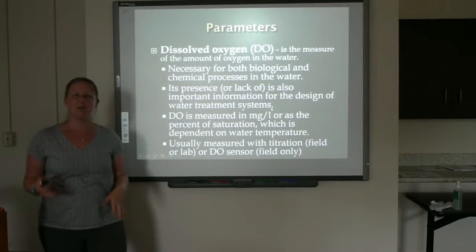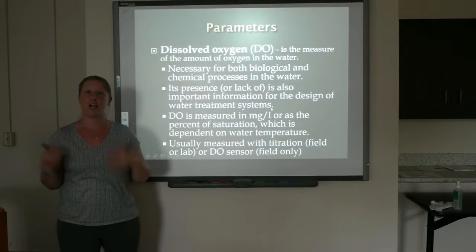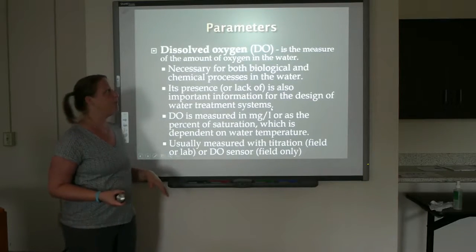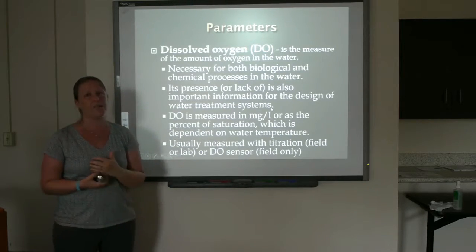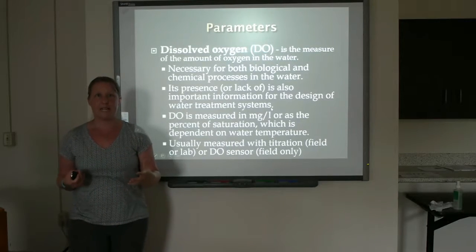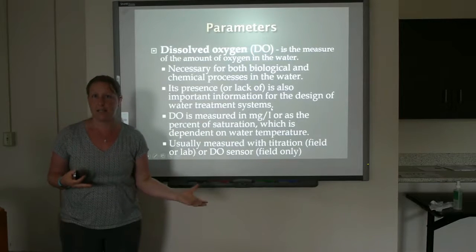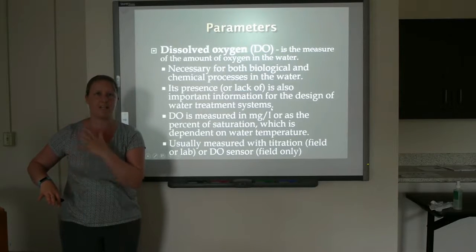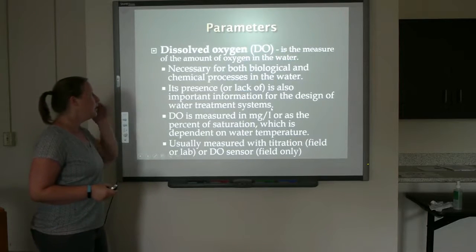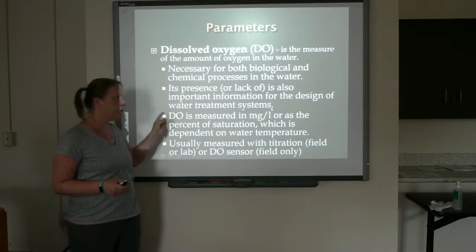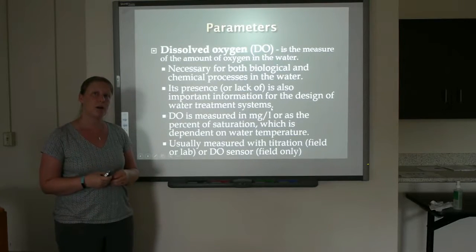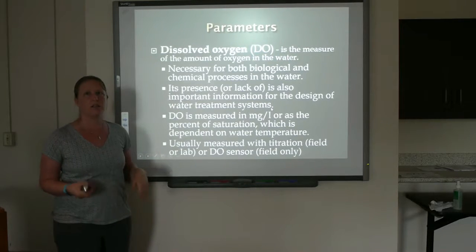Dissolved oxygen is pretty much what it sounds like — it's the measure of how much oxygen is dissolved in the water. This is one of those parameters that is very important for aquatic life, and it also dictates a lot of chemical processes in the water. Water that has more oxygen is going to have more oxidizing reactions happening in it. If it's oxygen limited, a lot of those oxidization reactions will proceed very slowly or won't proceed at all. This is really important for how you design water treatment systems, because how chemicals react in the water — especially chlorine — will be based on the dissolved oxygen.